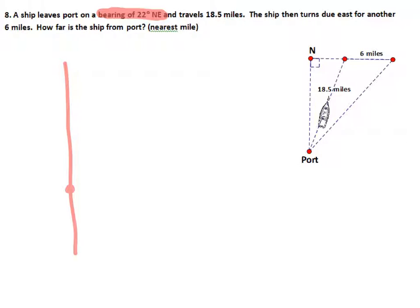If this is our north-south line, 22 northeast is the angle in here. That would be the 22, which in our diagram is this angle right here.